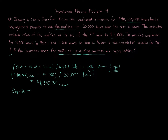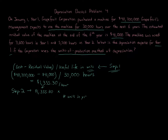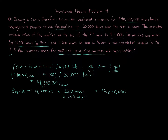Step Two: take the depreciation per unit calculated in Step One — $1,355.30 per hour — and multiply it by the number of units used in the year in question. For Year One, the machine was used for 3,600 hours. Multiplying 3,600 hours by $1,355.30 per hour gives a depreciation expense of $4,879,080 for Year One.